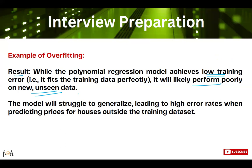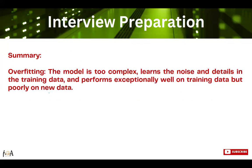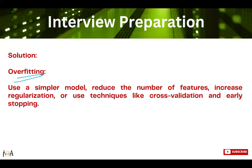It will likely perform poorly when new or unseen data arrives, because it has also learned noisy data which is not meaningful. This model will struggle to generalize and will lead to a higher error rate when predicting prices for houses outside the training dataset. In summary, an overfitting model is too complex — it learns noise and other irrelevant details of the training data, performs exceptionally well on training data, but performs poorly on new data. That is overfitting.